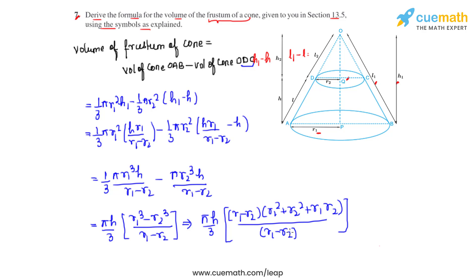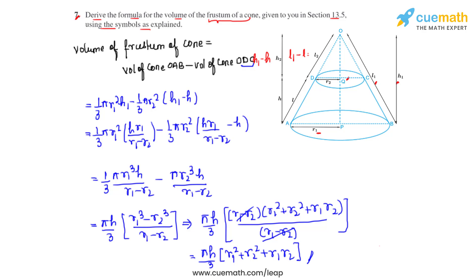So (R1 minus R2) and (R1 minus R2) cancel. The volume of the frustum of the cone is (πH/3)(R1² + R2² + R1R2). This is how we derive the formula to find the volume of the frustum of a cone.